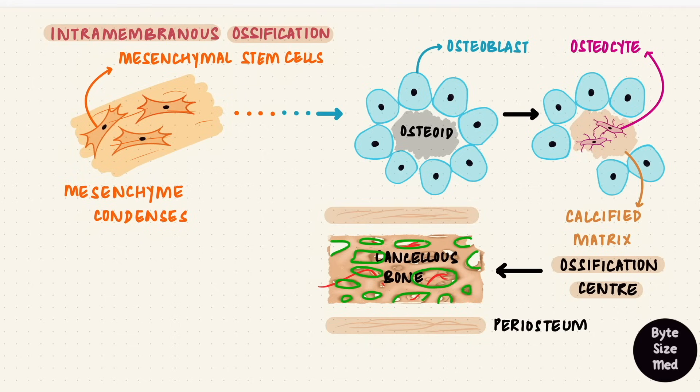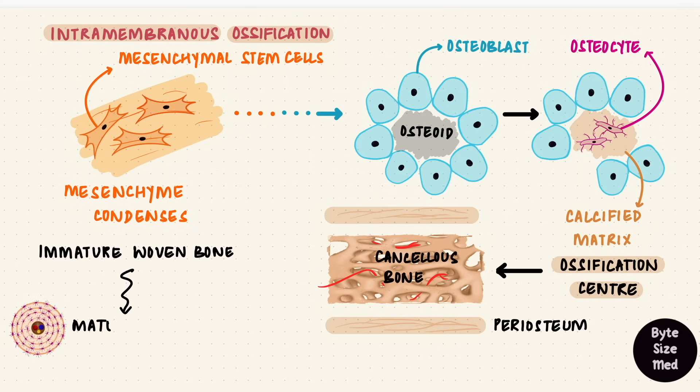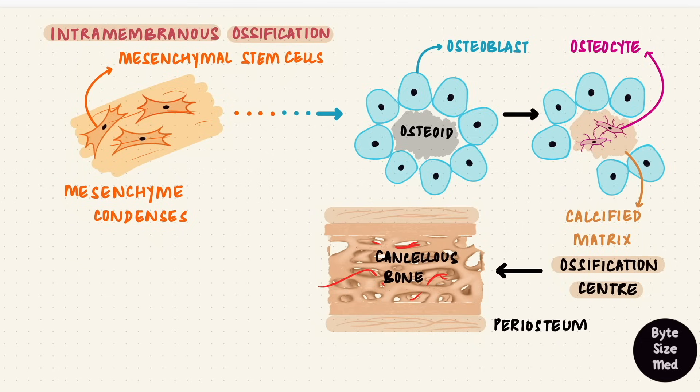The bone that first forms in any process of ossification is immature woven bone. That's irregular and not very strong, and most of it gets remodeled to form lamellar bone. Underneath the periosteum, compact bone forms, and inside that we have cancellous bone. Thus bone has been formed from the mesenchyme directly, cartilage was not involved.